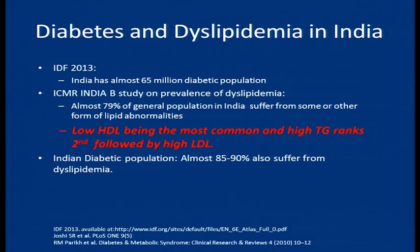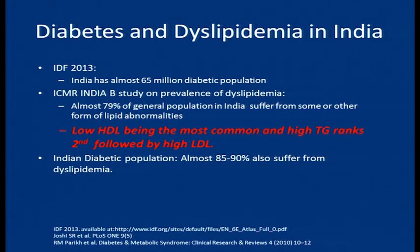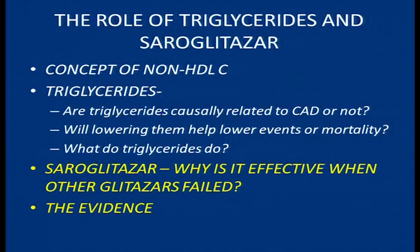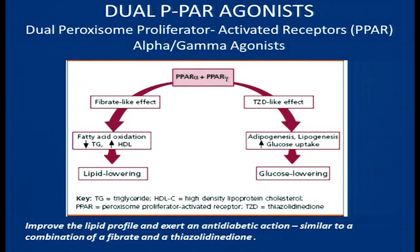In India, we know from the India Diab study — a 17,000 patient study — that the commonest lipid abnormality is low HDL, followed by high triglycerides, and this is particularly common in the diabetic population.